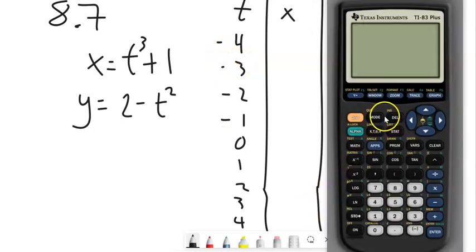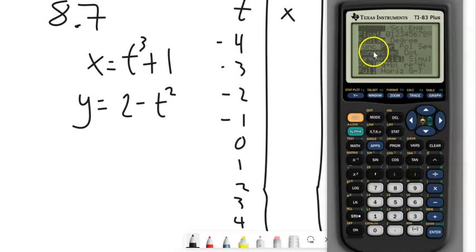We could do it by hand. We could also do it on the calculator, right? We talked last time about you make sure that you're in that parametric mode. You can arrow down to that and choose it.